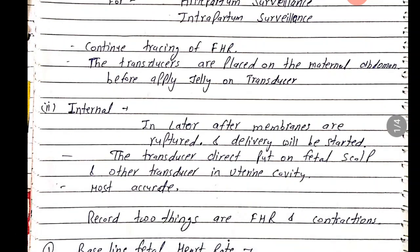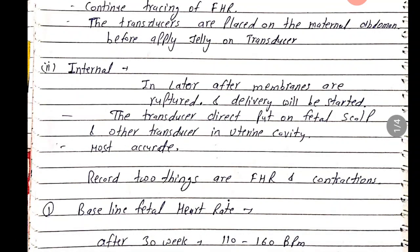Second is internal CTG. Internal CTG is done during delivery or after the rupture of the amniotic membrane. In this method, the transducer is directly placed on the fetal scalp, and the second transducer is placed inside the uterine cavity to assess uterine contractions.